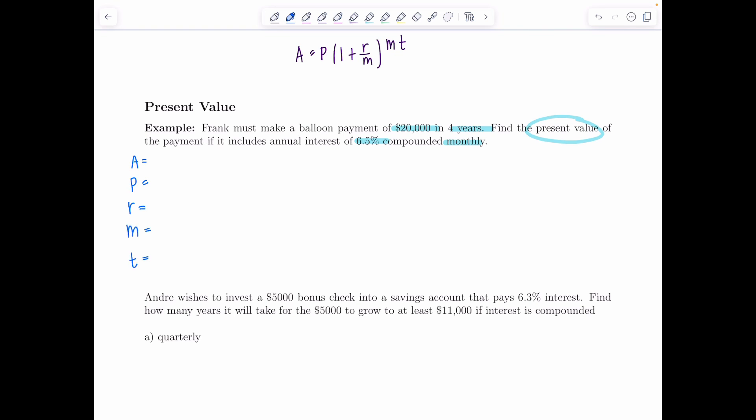Now this time the balloon payment of $20,000 that's happening in the future that's happening in four years. So that's actually the final amount and T time is four years. I need to find the present value of the payment means what's the present value of that $20,000 right now that he's going to have to pay back in four years. Now the interest rate 6.5 percent so that's 0.065 it's being compounded monthly so M is 12.